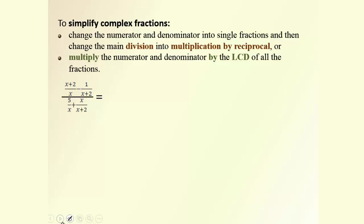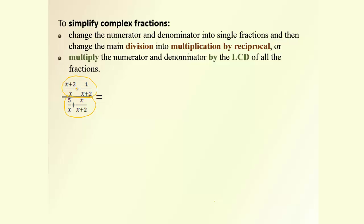We also need to be able to simplify complex fractions. A complex fraction is a fraction that contains more than two levels — for example, here we have four levels. To simplify it means to bring it to a common fraction with just two levels. We can use two different methods. The first is to look at the main division bar and change the division into multiplication by the reciprocal, but this can only be done if the big numerator and big denominator are each single fractions. So we first perform the subtraction in the numerator and the addition in the denominator.